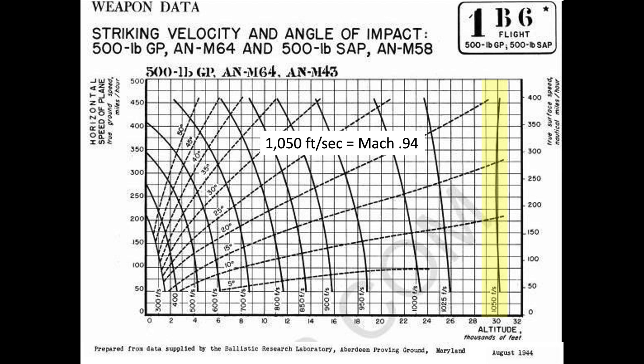A couple observations from the chart. The maximum bomb contact speed equates to 1,050 feet per second. 1,050 feet per second equates to Mach 0.94.